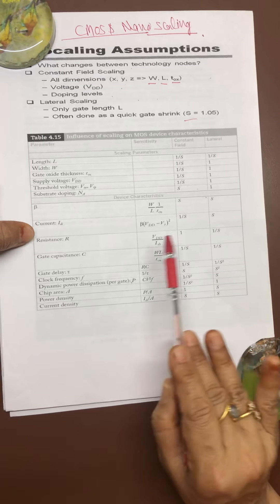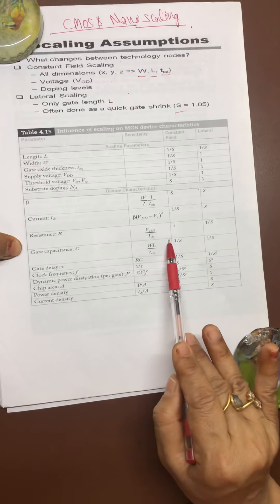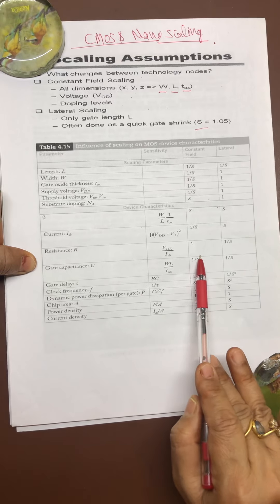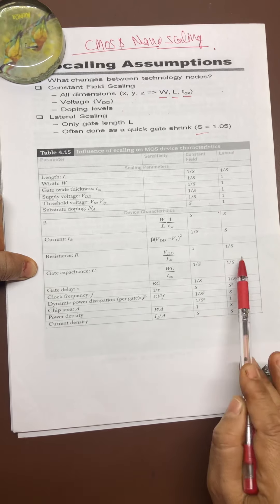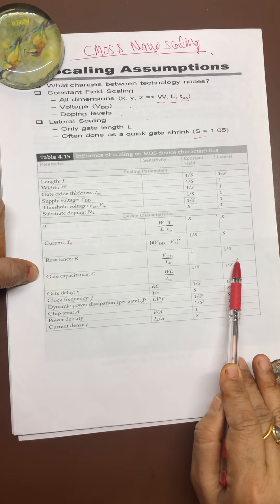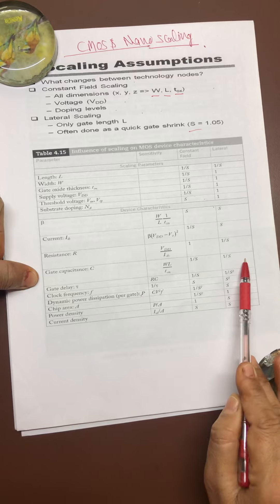Resistance, that is V_DD by I_DS, for constant field it is 1, for lateral scaling factor is 1 by S. Similarly, the capacitance value is there, gate delay value is there.